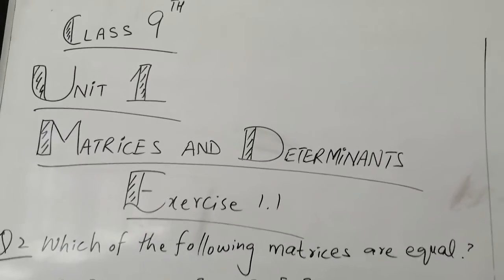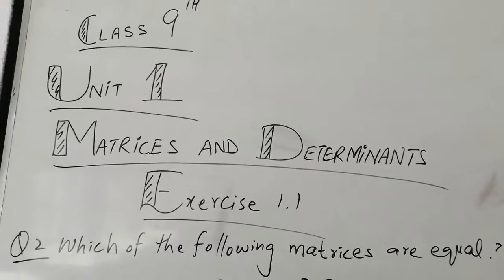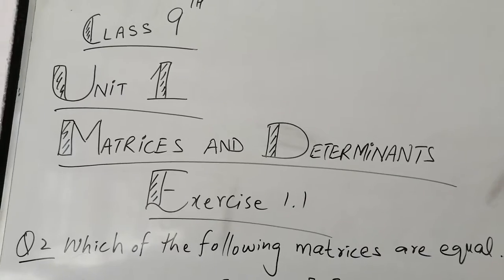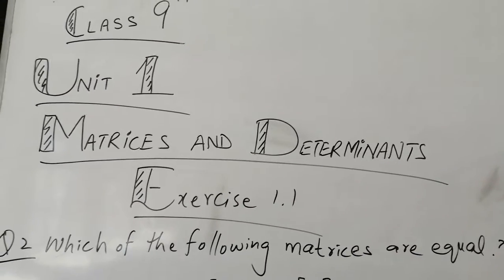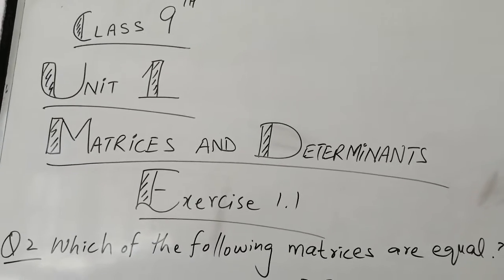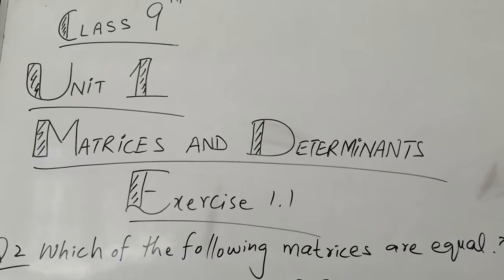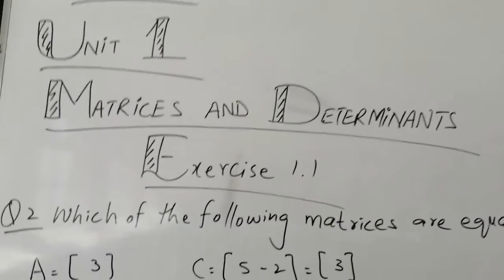Here we have to see which matrices are equal. Equal matrices concept we have already done in the description. Equal matrices have two conditions. The first condition is that their order is same, and the second condition is that their entries are same. Now we will see that there were many matrices and we will see which matrices are similar. First we will see which matrices should be equal, then the entire entries should be equal, corresponding entries.